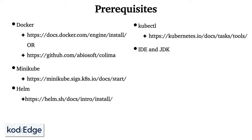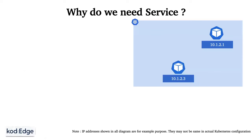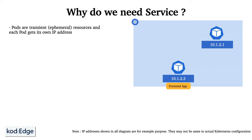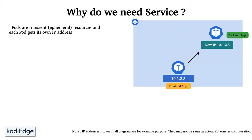Before the demonstration, let's understand why we need a service. Pods are transient resources and each pod gets its own IP address. For example, if a front-end application connects to a back-end application using the back-end pod's IP address and the back-end pod gets terminated, Kubernetes creates a new pod with a new IP address. The front-end application will then fail to connect, creating an issue.